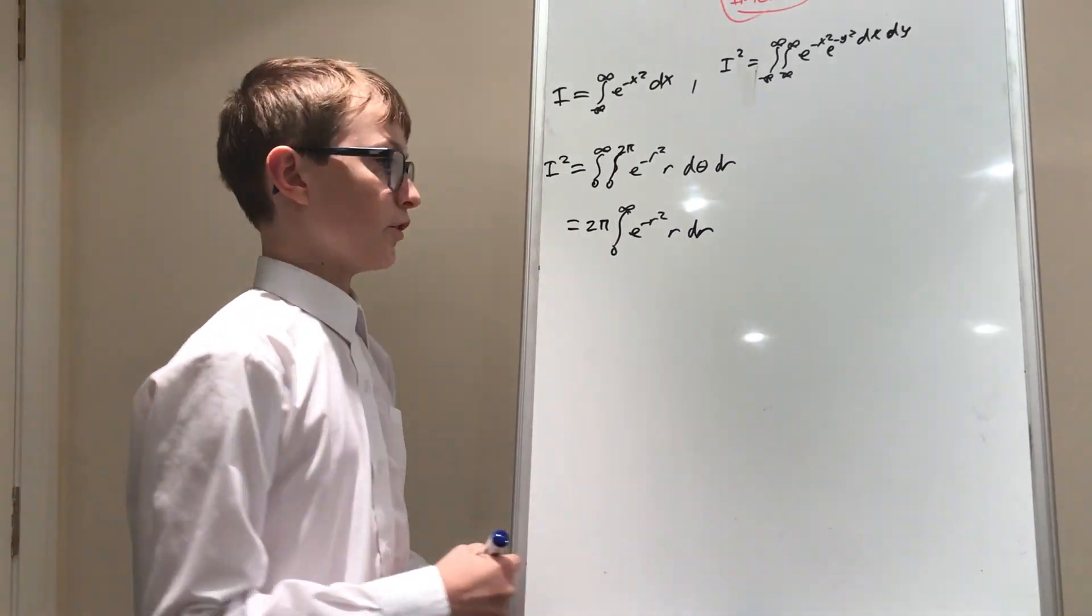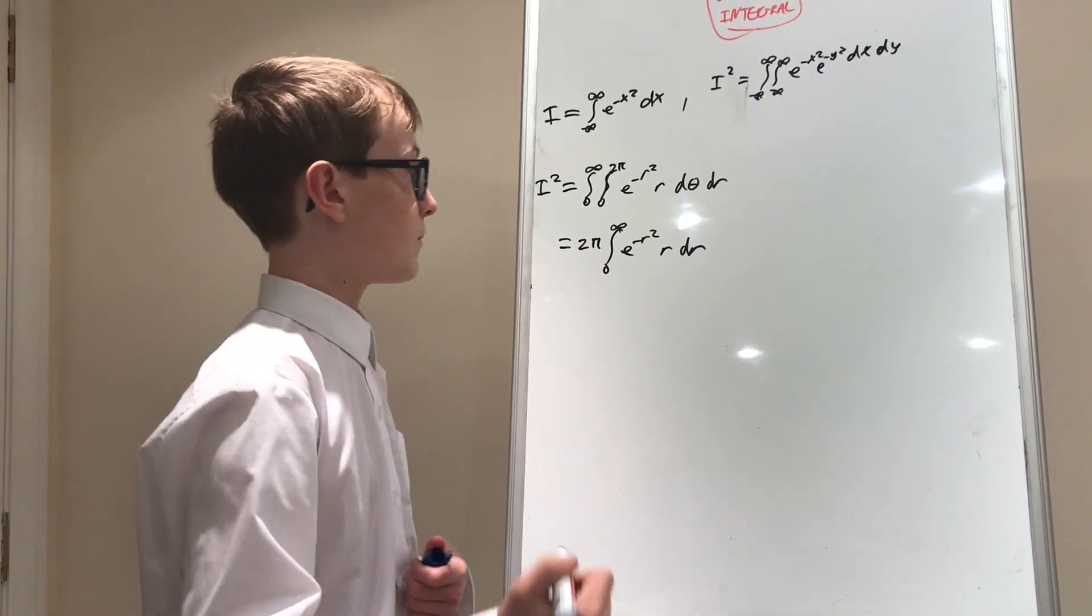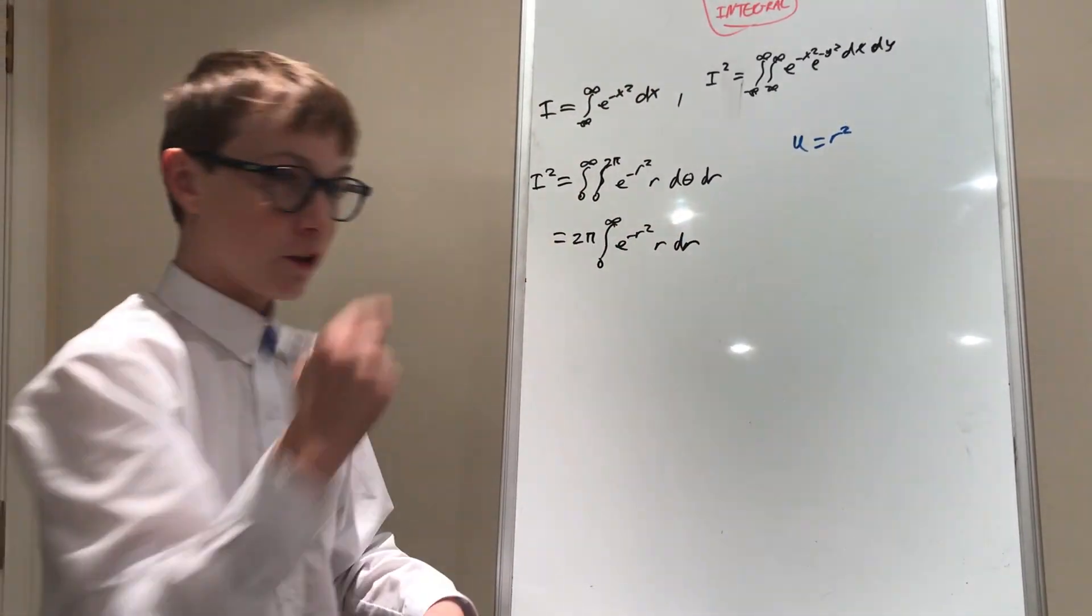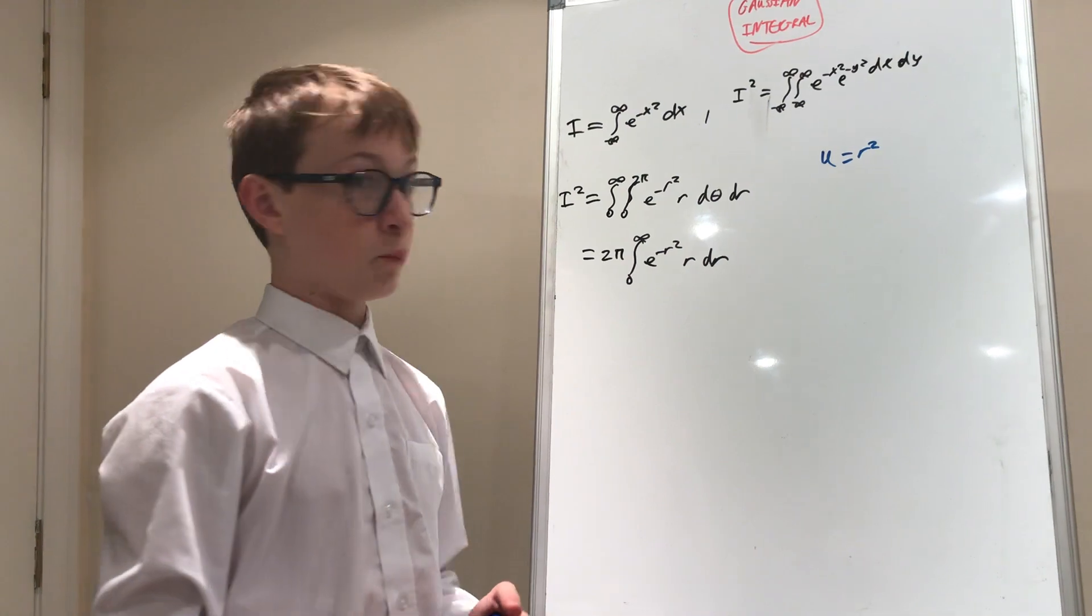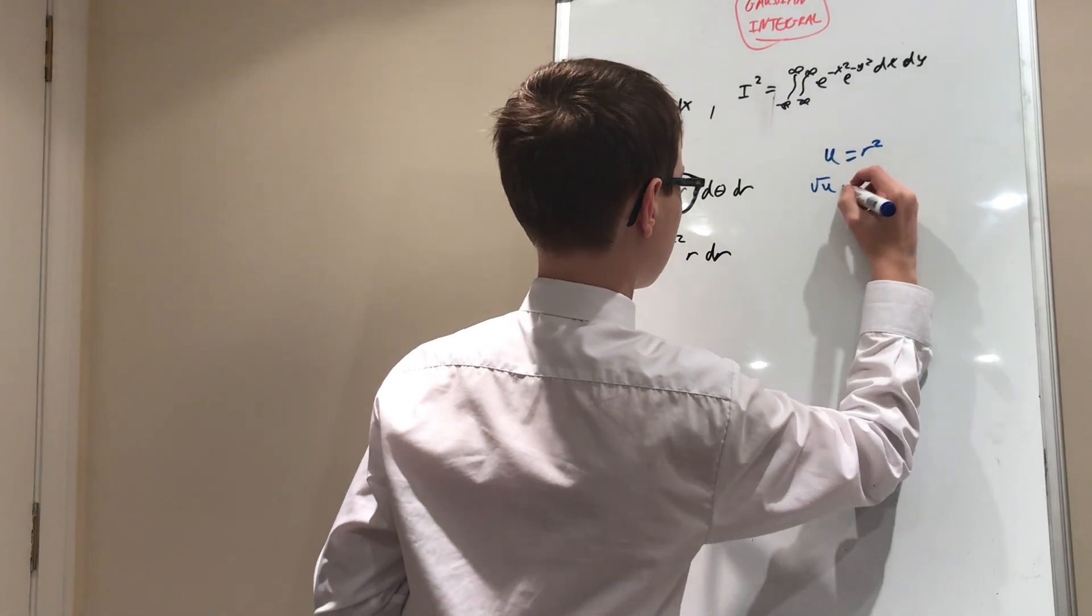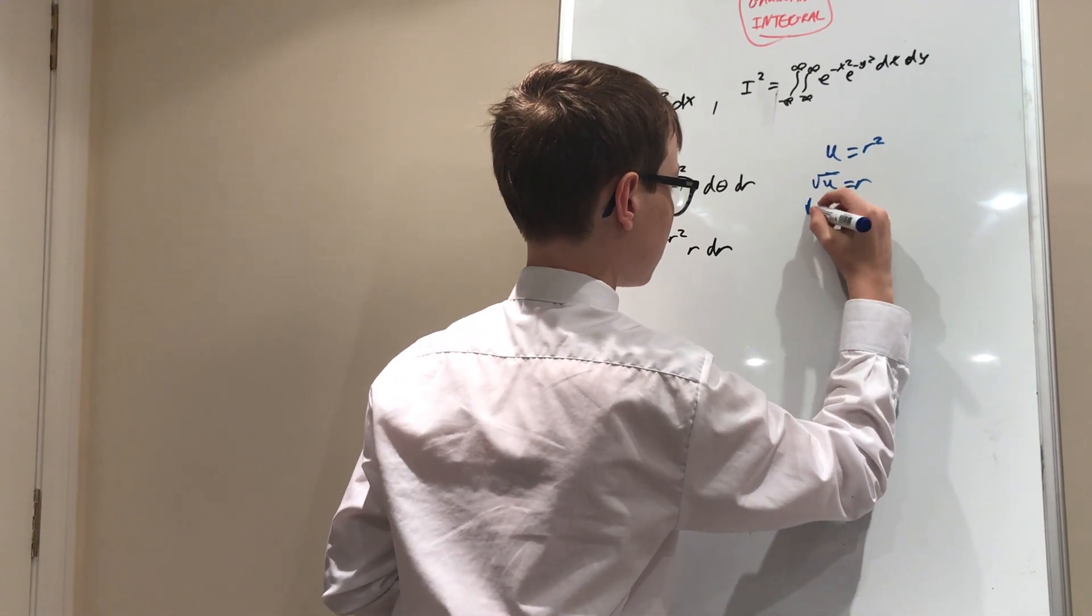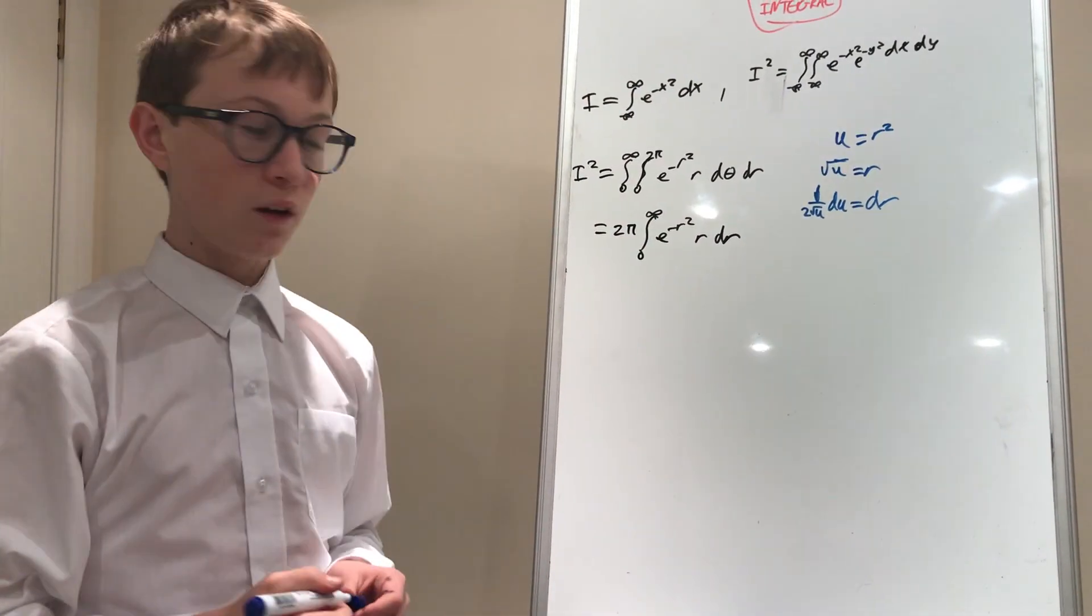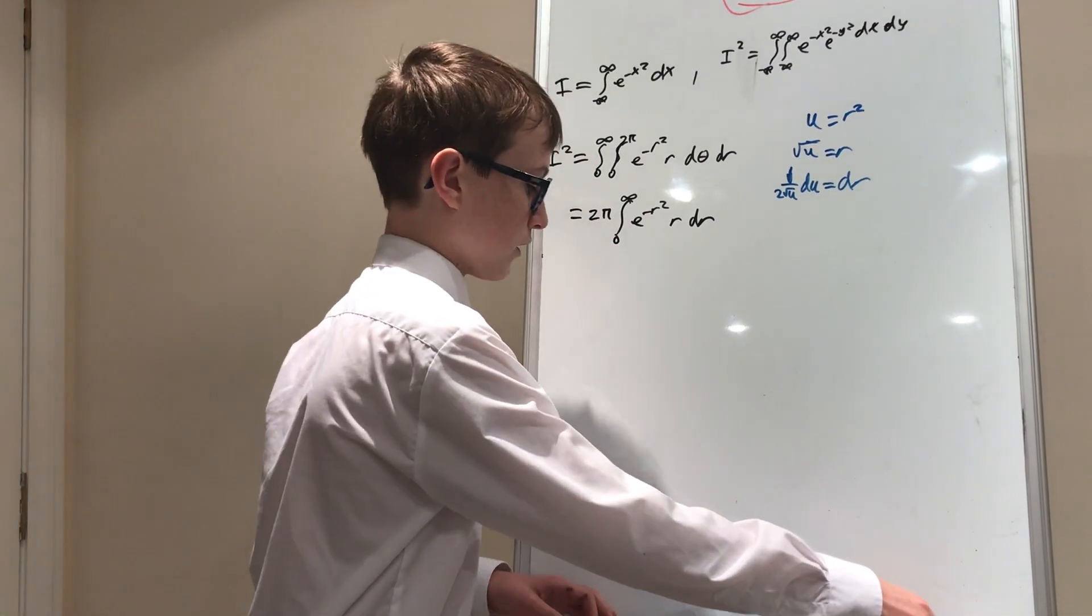Now, now we can use our usual techniques, u sub being the one which we're going to use this time, or u substitution in blue. u equals r squared. Note that we can't let u equal negative r squared because taking the square root on both sides would be very messy. So square root of u equals r. So now one over two square root of u du equals dr. This is just simple differentiation. The facts that we need to know about this to plug it in.